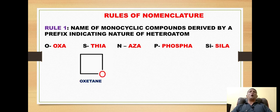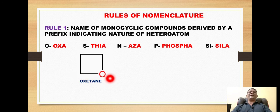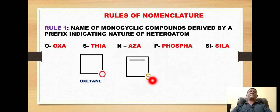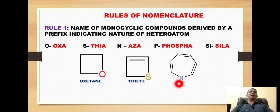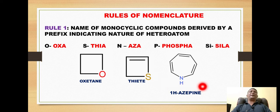So the name 'oxetane' is given, which is a combination of the prefix 'ox' and the suffix 'etane'. For sulfur, we use the prefix 'thia', and the name 'thietane' shows that the prefix used is 'thia'. For a ring with nitrogen, we use the prefix 'aza'. For example, this ring is called 'azepine', a combination of prefix 'aza' and suffix 'epine'.